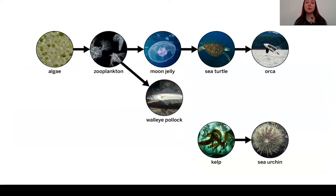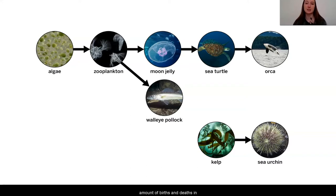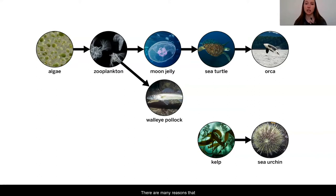In our last lesson, we started to think about how different populations could have affected the moon jelly population. Throughout this unit, we've been collecting evidence about different ways that populations change or stay stable. From the very beginning, we knew that the moon jelly population was increasing — this is what the evidence was telling us. We realized this has something to do with the amount of births and deaths in the moon jelly population. The births must be happening more than the deaths.